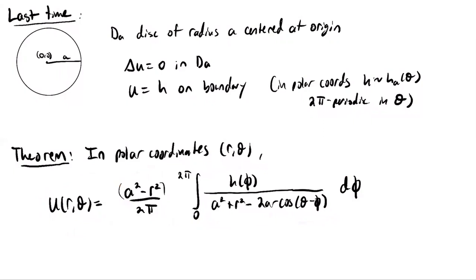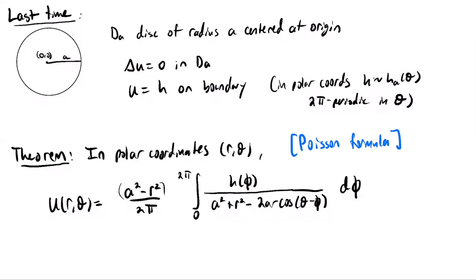In polar coordinates, the function u(r, theta) equals this integral, which solves the problem. We're always given the function h, which is the boundary function. This tells us that we can construct our solution by integrating values of h along the boundary circle, times this complicated quantity, multiplied by a factor. This is a pretty famous formula called the Poisson formula, which tells you how to solve the Dirichlet boundary value problem for Laplace's equation in a disk in the plane.